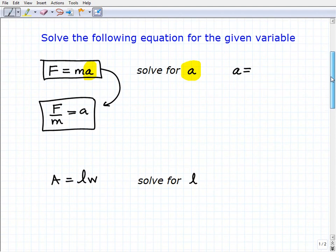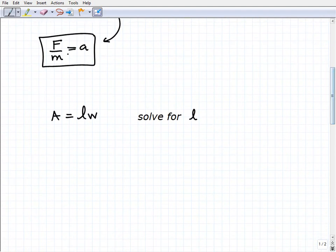All right, let's move on to our next problem. Here we're given the formula A equals L times W. We might recognize this as area equals length times width. So to solve for L, this is very much like the last problem. I'm going to think of A and W as numbers.